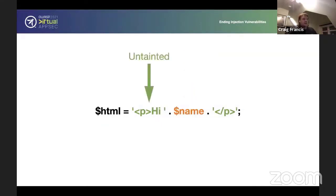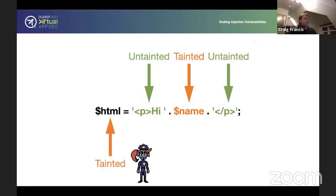In this case, we have the string, the paragraph hi, and that's untainted. Then we have a variable name, which is tainted. And then you have another string, which is for untainted. And then that HTML is now considered untainted. And our defender, templating engine or whatever can stop it. It can say, no, I'm not having that. I'm rejecting that.